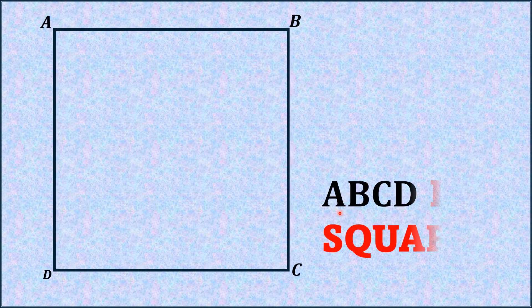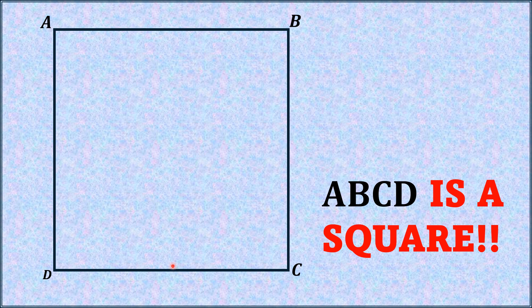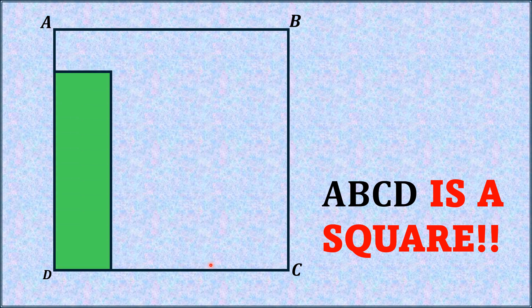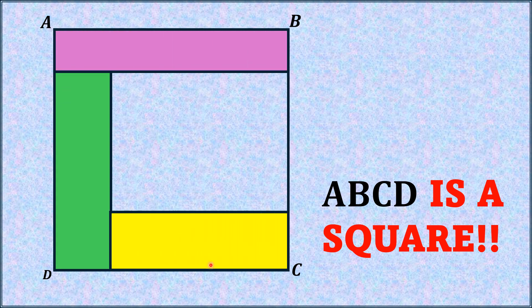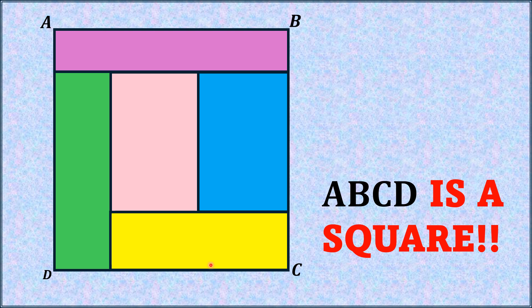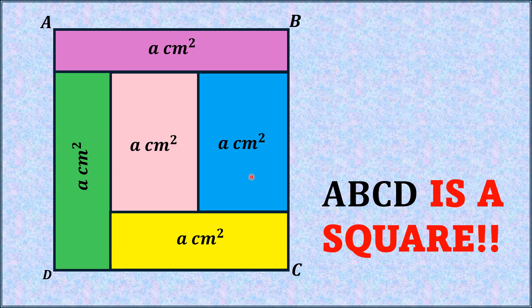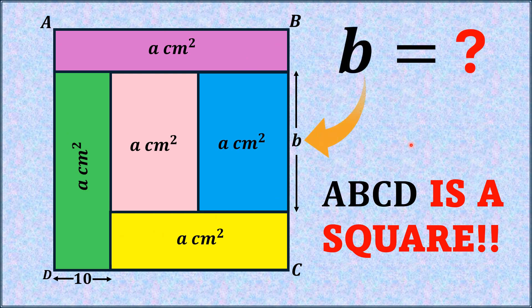Hello everyone. In this problem we have given a square ABCD. This square is divided into 5 rectangles. The area of each rectangle is equal to each other — let's say each area is A centimeter square. If this length is 10 centimeters and this length B is unknown, then by this limited data we have to find the length B.